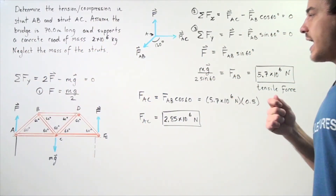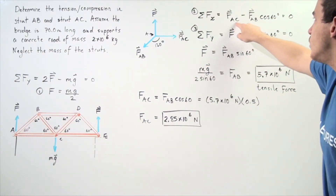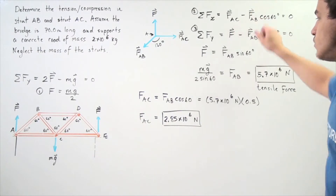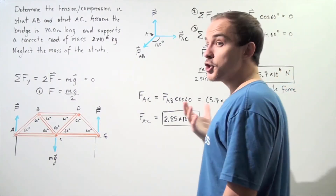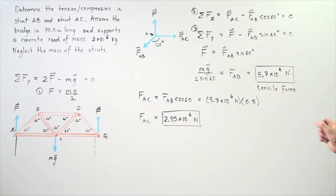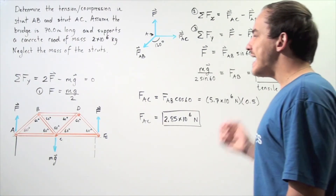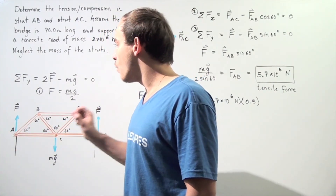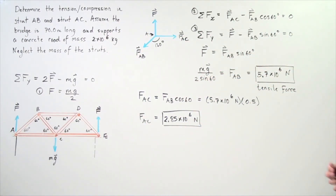Using Equation 2 to solve for the compressive force in strut AC: FAC = FAB·cos(60°). Since cos(60°) = 0.5, we multiply 0.5 by the tensile force to get FAC = 2.85×10⁶ N, which is the compressive force in strut AC. The tensile force in strut AB is 5.7×10⁶ N.